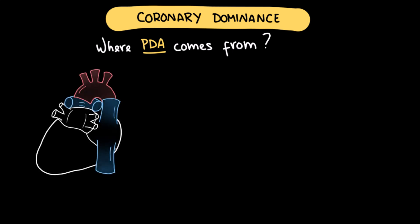An important anatomical concept is coronary dominance. Coronary dominance is defined by which artery gives rise to the posterior descending artery, or PDA. In most people, about 70-80%, the PDA arises from the right coronary artery. This is known as right coronary dominance, and we often refer to it as having a right dominant heart.